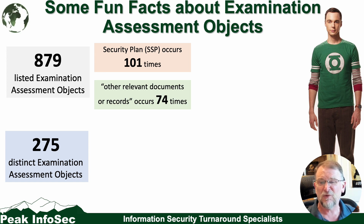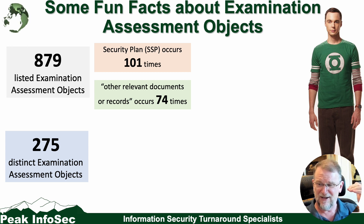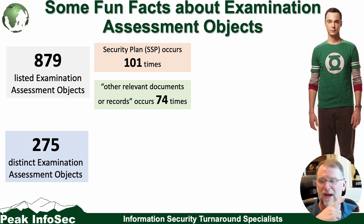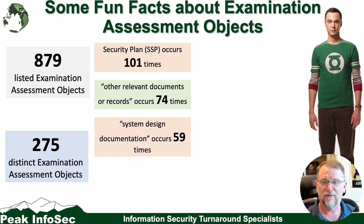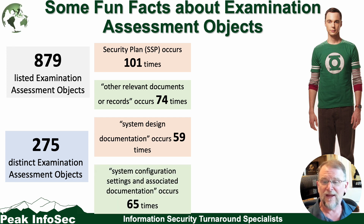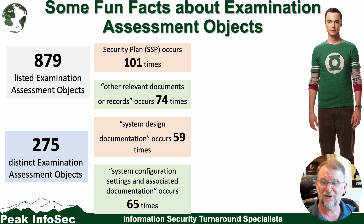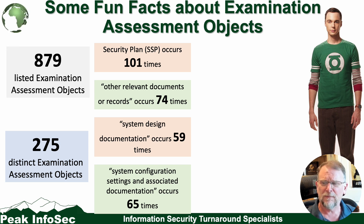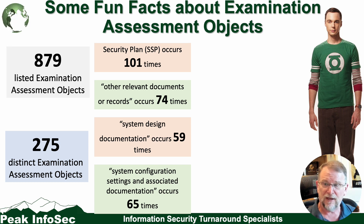Other relevant documents or records occur 74 times — that's kind of the other end of the spectrum, the catch-all for everything else that may not be covered in the other requirements. Likewise, system design documentation occurs 59 times, telling us how things should be. And then system configuration settings or associated documentation occurs 65 times — that's the technical part of it.